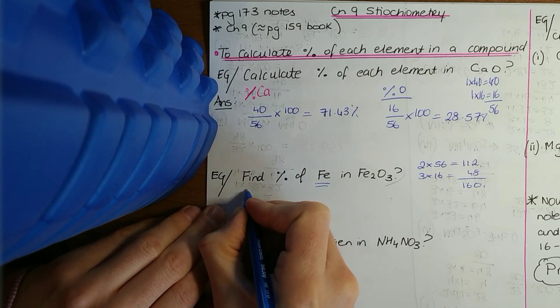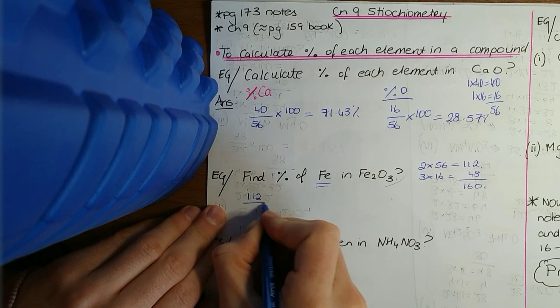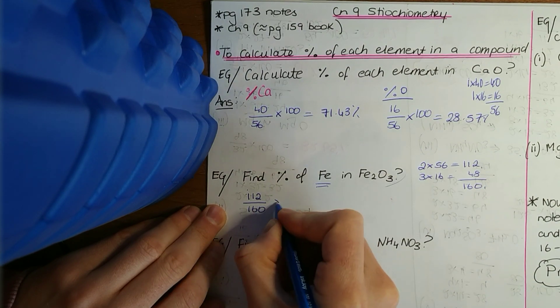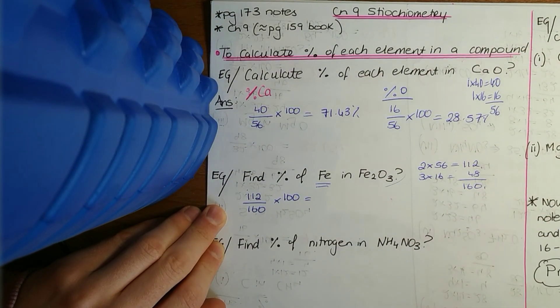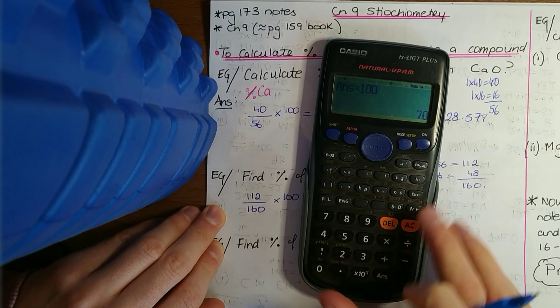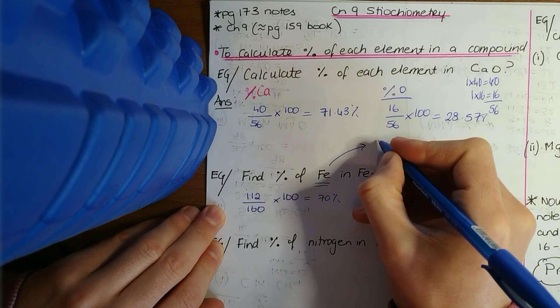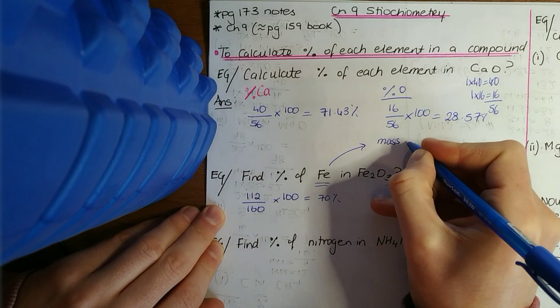Three oxygens: 3 by 16 is 48, so the relative molecular mass is 160. Here it says the mass of iron in it, so it's 2 by 56 is 112. You put in both of the irons over 160 and times that by 100. 112 divided by 160 times that by 100, you get 70 percent.